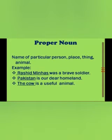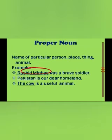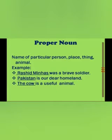The second kind is proper noun, which in Urdu is called ism-e-marfa — the name of a specific person, place, or thing. For example: 'Rashid Minhas was a brave soldier,' 'Pakistan is our dear homeland,' and 'The cow is a useful animal.' The underlined words in these sentences are proper nouns — they are the names of specific persons, places, things, or animals.